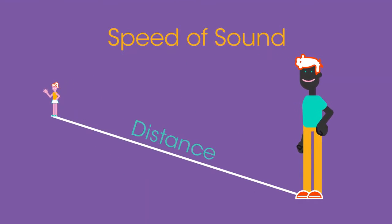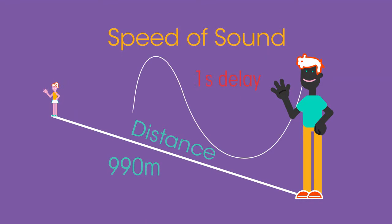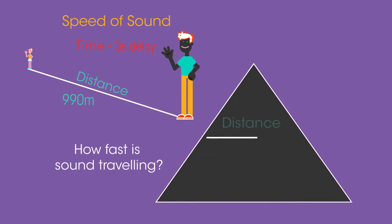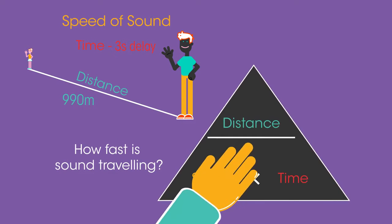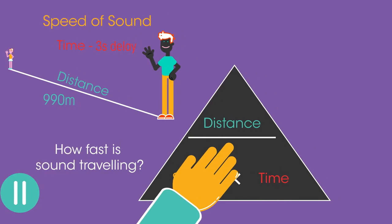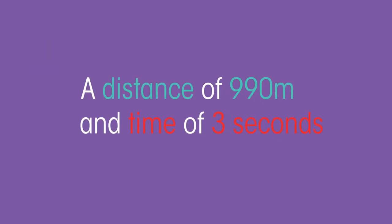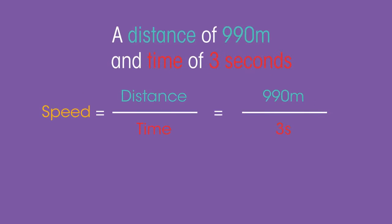These two people are standing 990 metres apart. When the person speaks, there is a three-second delay before the second person hears the words. How fast is sound travelling? Pause the video and work it out. With a distance of 990 metres and a time of three seconds, the speed of sound in air is 330 metres per second.